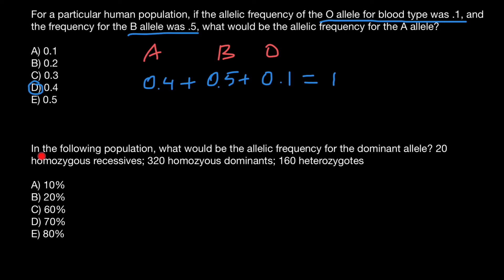Second question: in the following population, what would be the allelic frequency of the dominant allele? We have 20 homozygous recessive.